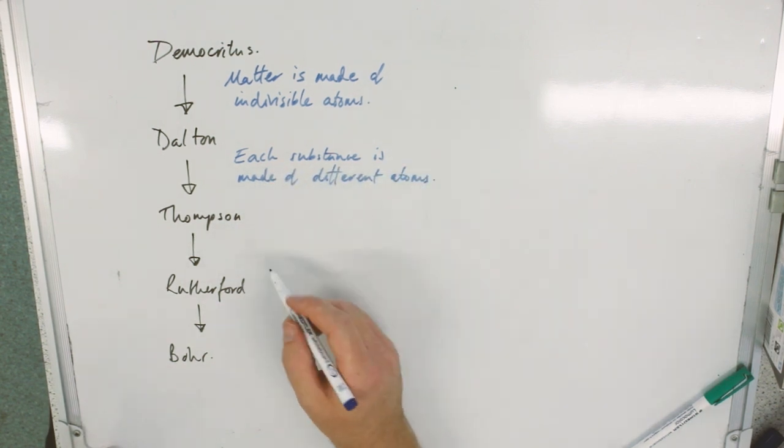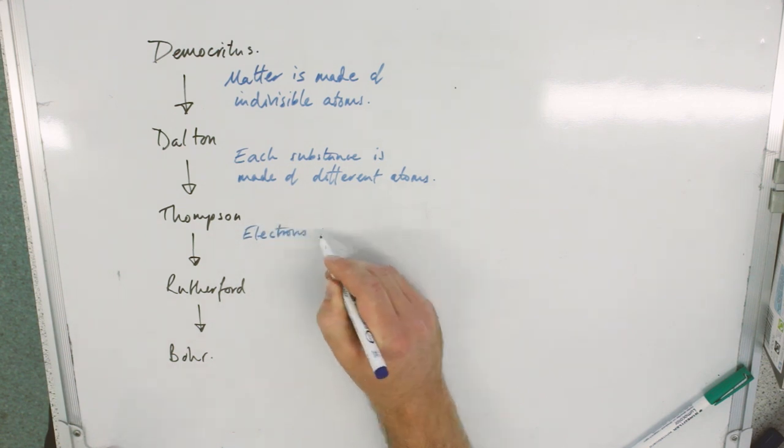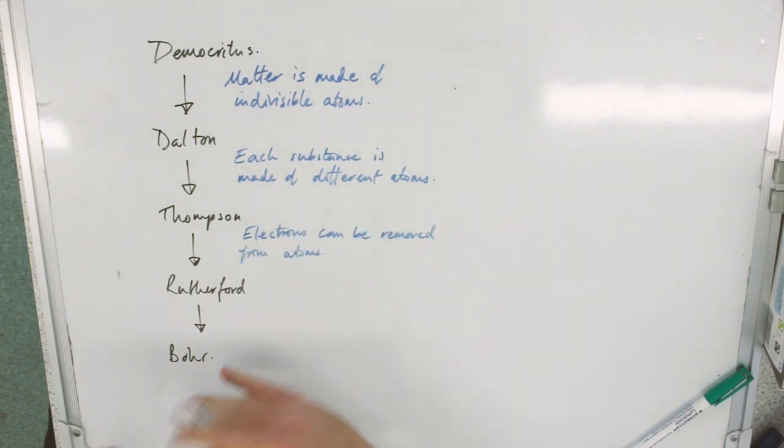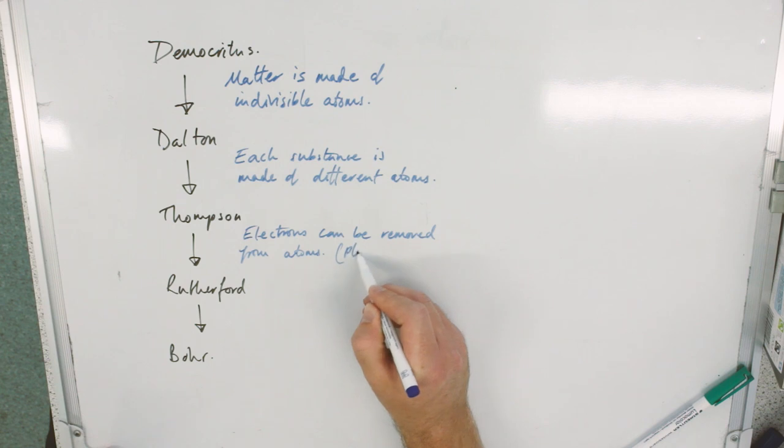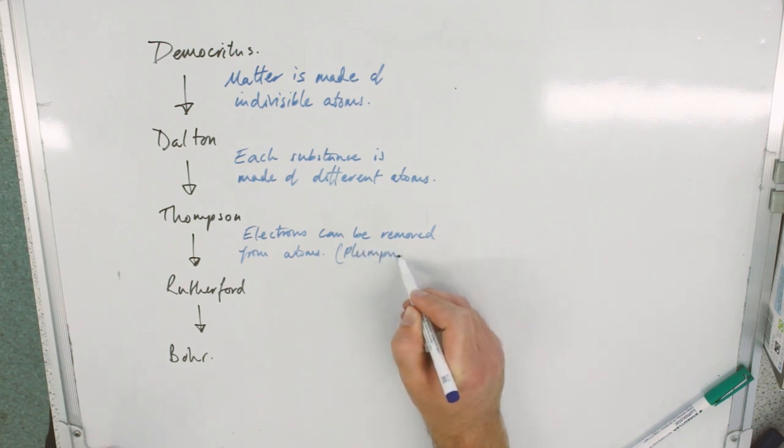Thomson, electrons can be removed from the atoms and there's positive cakey stuff so I'm just going to put that in as the plum pudding model.